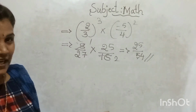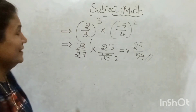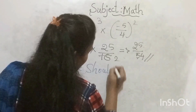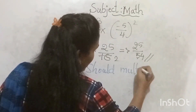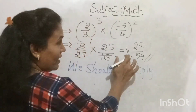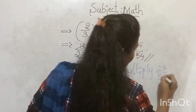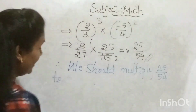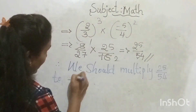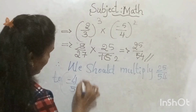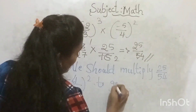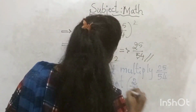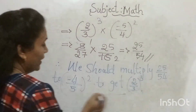Therefore, we should multiply 25/54 by (-4/5)² to get (2/3)³. That is the required number.